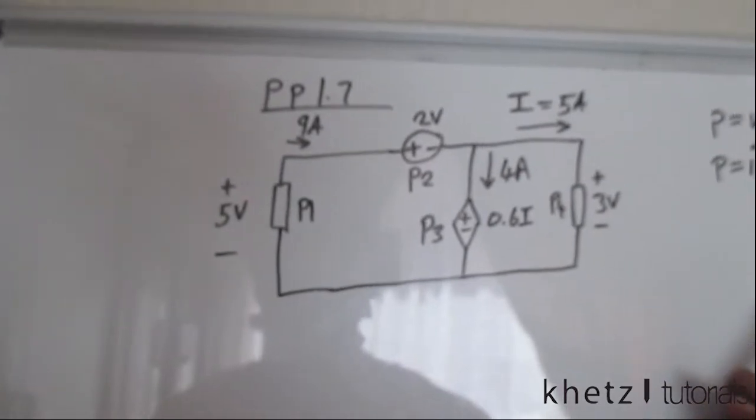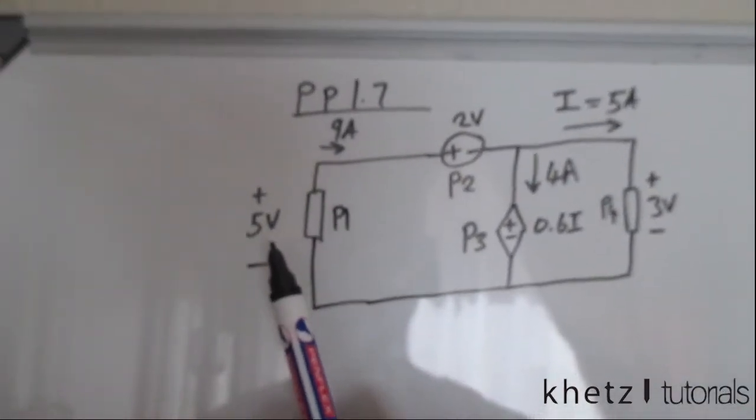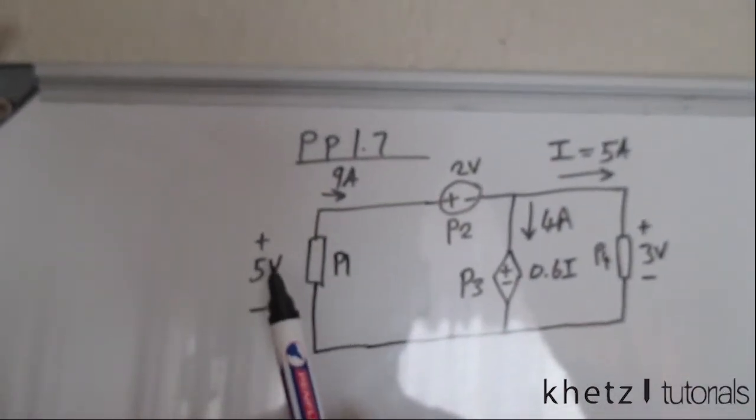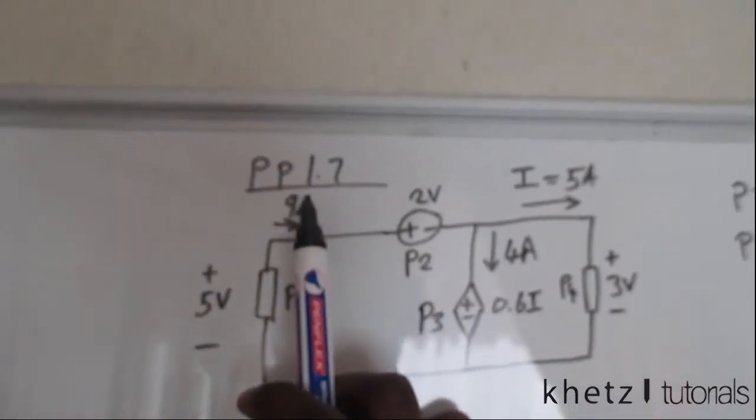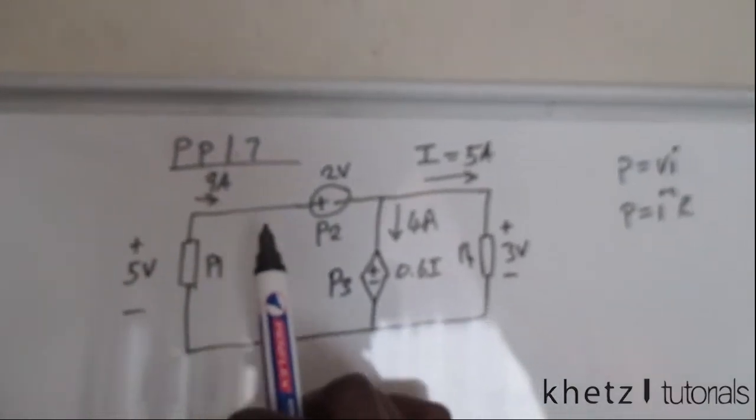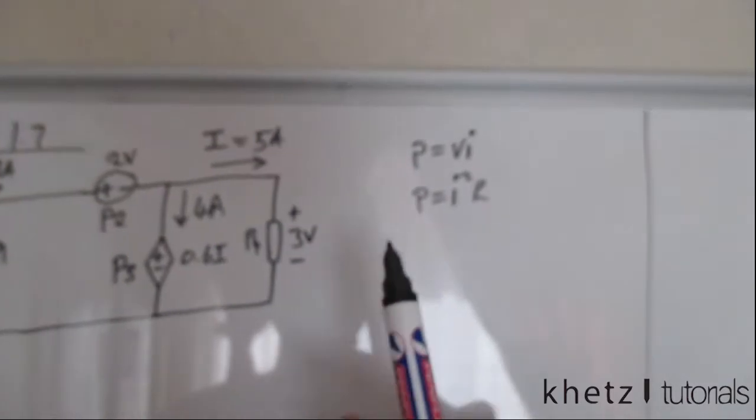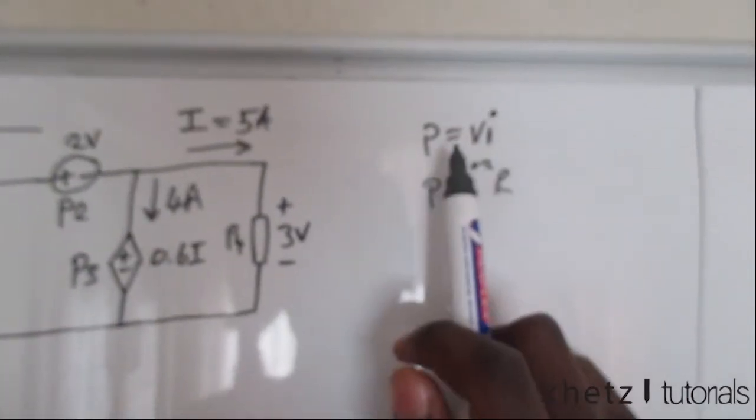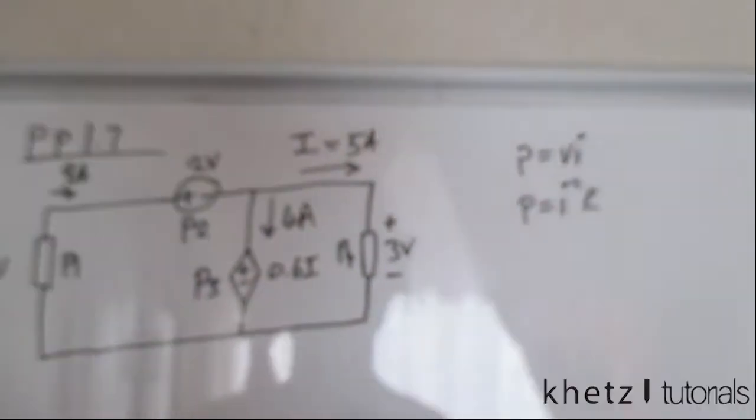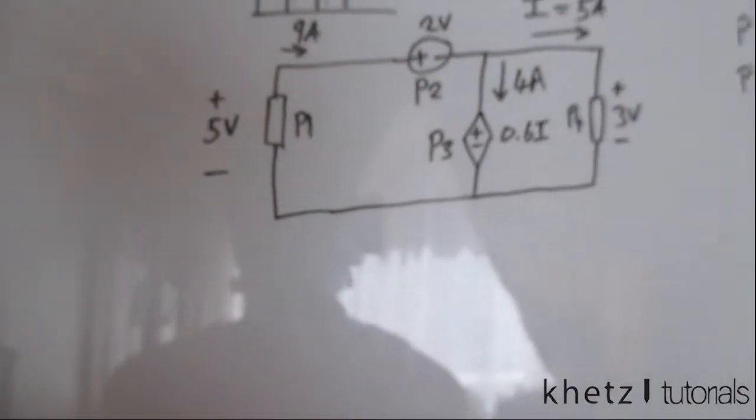In this case, we have voltage across the element and current given to us. So the best thing to do, or the easiest thing to do, would be to use the first formula, which simply says P is equals to VI. So let's do that quickly.